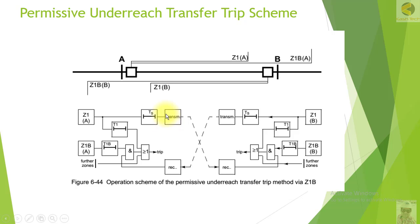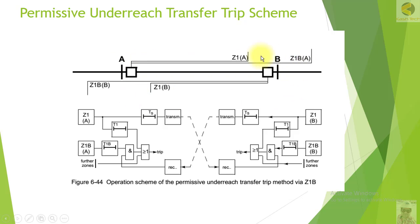Here you can see Station A and Station B. Zone 1 for Station A reaches to point 1A, whereas the extended zone reaches to 1B. For Station B, Zone 1 is at 1B and the extended zone is also at 1B. The extended zone is normally set to 120% of the line length.